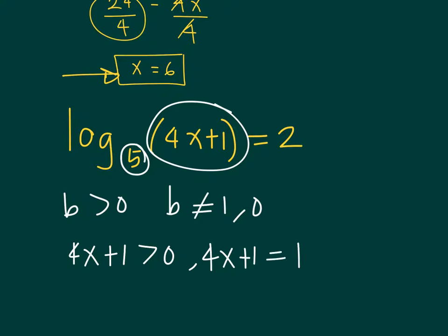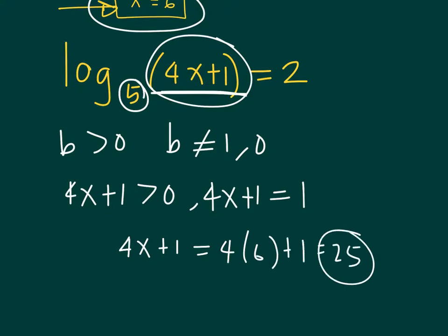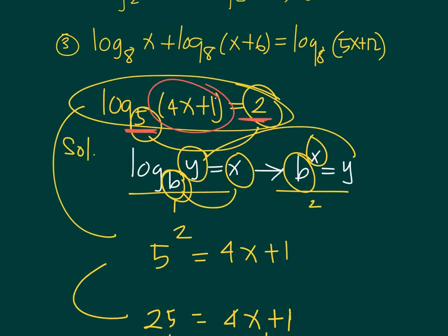Going back to x=6: we substitute into 4x+1 to get 4(6)+1 = 25. Since 25 is a positive number, the argument is positive, so x=6 is a valid solution to the equation.